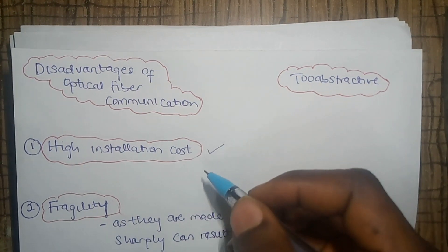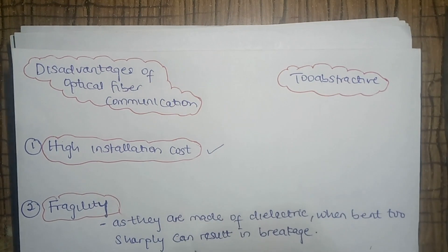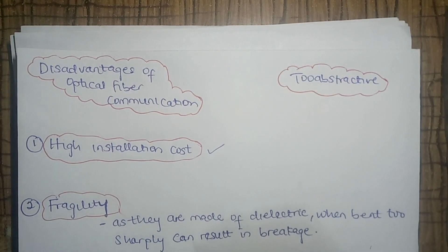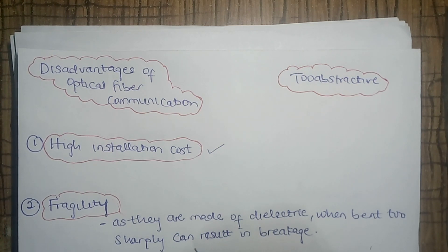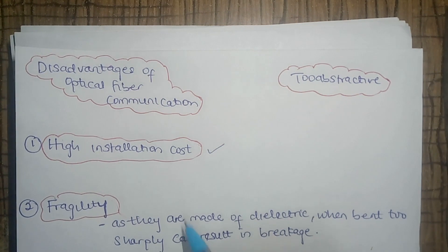The first disadvantage is the initial cost. We saw in the previous video that the maintenance of optical fiber is quite less compared to copper wires, but the initial cost is enormous — it is huge compared to traditional copper wires. That's one disadvantage.